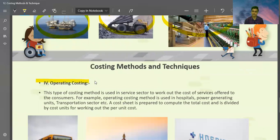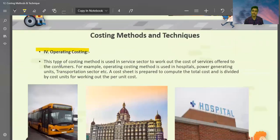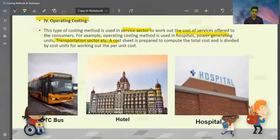Operating costing. The main thing is that the service sector follows it. These types of costing methods are used in service sector to work out the cost of service offered to consumers. For example, in the operating cost, there is the use of hospital, power generating units, transportation sector, etc. A cost sheet is prepared to come to the total cost and is divided. I have some photos here, such as the DTC bus, hotel and hospital.